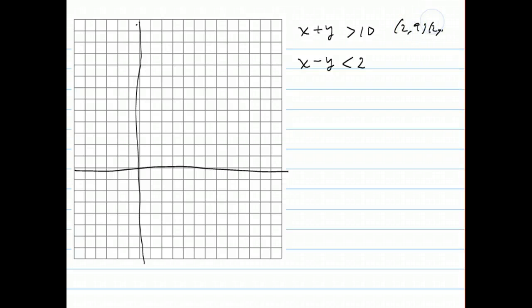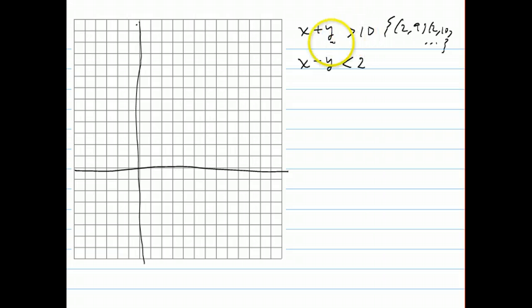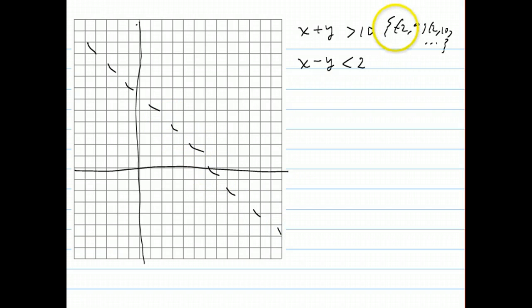Both expressions are infinite — 2 plus 10 is greater than 10. When we graph all the points that make the inequality true, we graph x plus y equals 10 with a dotted line, and then we have to decide which side of the line to shade on.